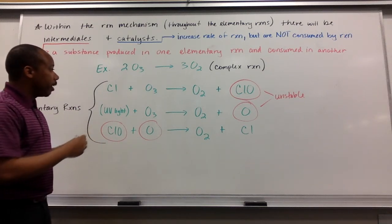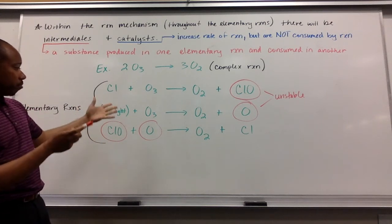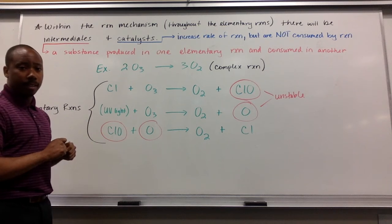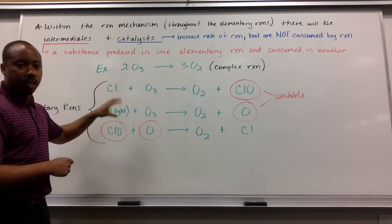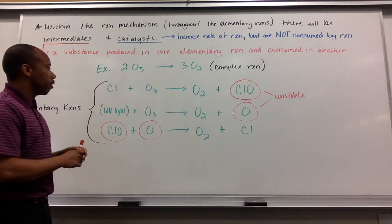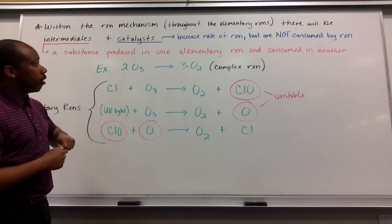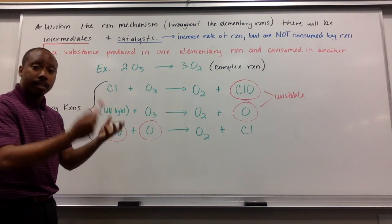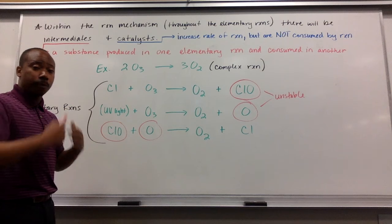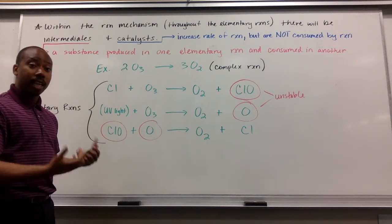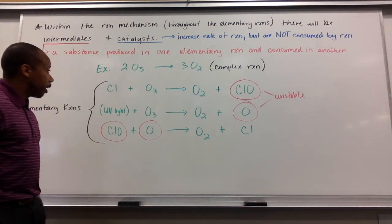Now, do we see any more intermediates? I don't believe so. I think that's it. Now, UV light is not considered a reactant so that would not be in our discussion further. Now, do we see any catalysts? A substance that was present at the beginning that was not used up completely and is present at the end? Yes, we do. That substance is chlorine.